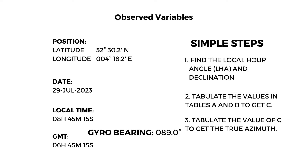Step two: tabulate the values in Tables A and B to get C. Step three: tabulate the value of C to get the true azimuth. To achieve them, let's first know the values we're going to use for the ABC method.